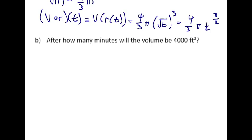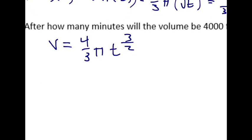Alright, so after how many minutes will the volume be 4,000 feet cubed? Well, let's figure that out. We've got a new function here, v equals 4 over 3 pi t to the 3 over 2. Do I replace t with 4,000 or v with 4,000? V, right? The volume is 4,000.